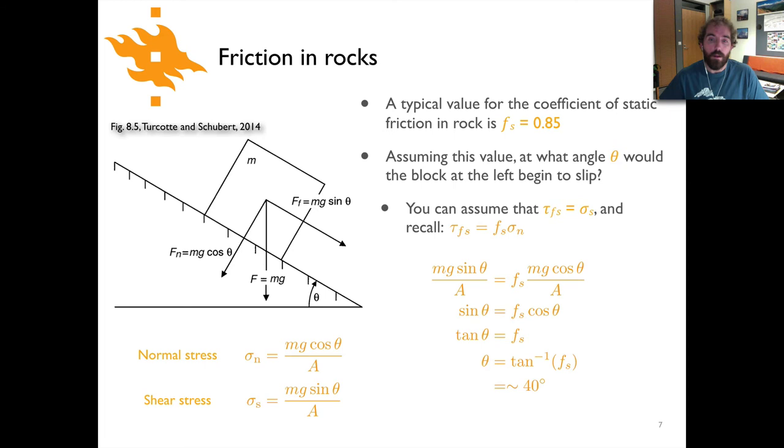Okay let's see what did you come up with. Well we know a few things. I told you that tau fs equals sigma s and that we had defined the frictional relationship to say that the frictional resistance was equal to fs times sigma n. You can basically just set those two things equal. So in other words our shear stress sigma s which is defined here is equal to fs times sigma n. You can see that you can drop mg and a because they're on both sides of the equation, so you're left with sine of theta equals fs times the cosine of theta. If you divide the sine of theta by the cosine of theta that equals the tangent of the angle theta which is then equal to fs, and if you take the arc tangent of fs you can then find your angle theta. You should have hopefully found something like 40 degrees.